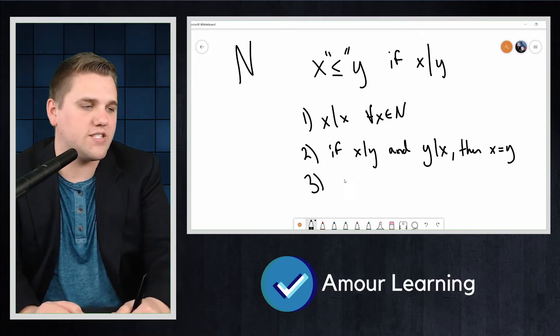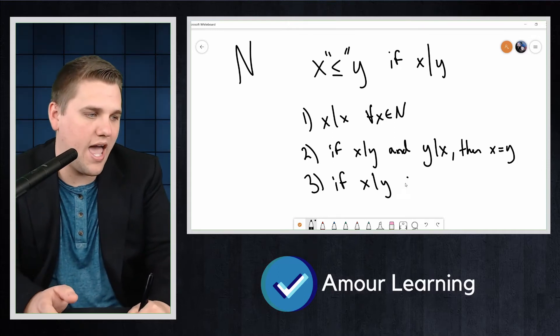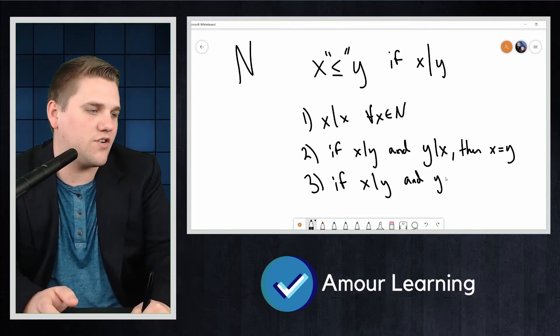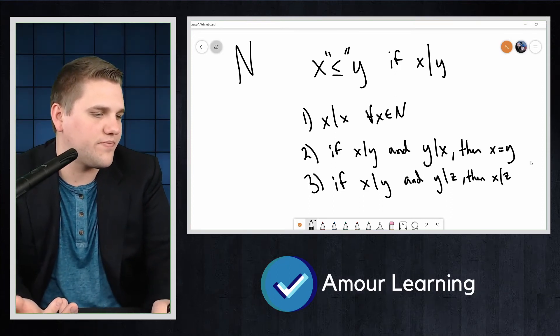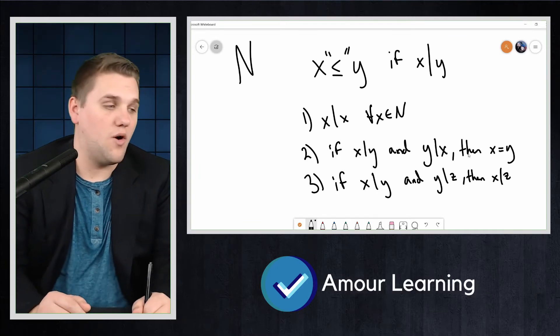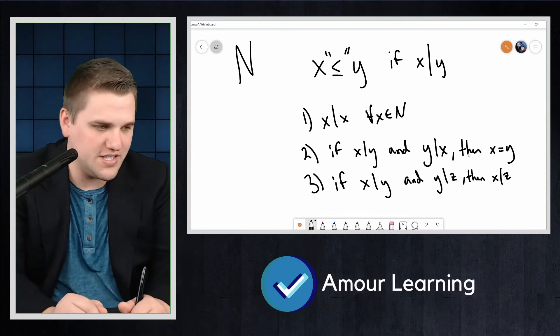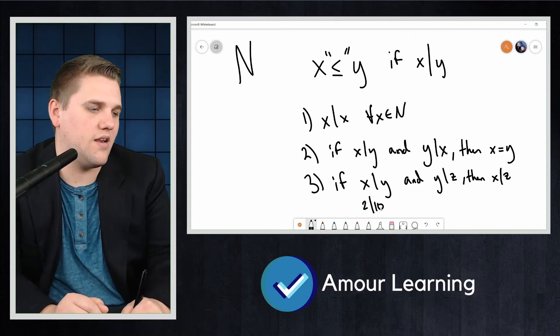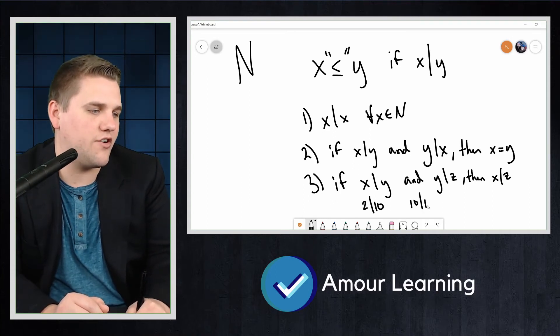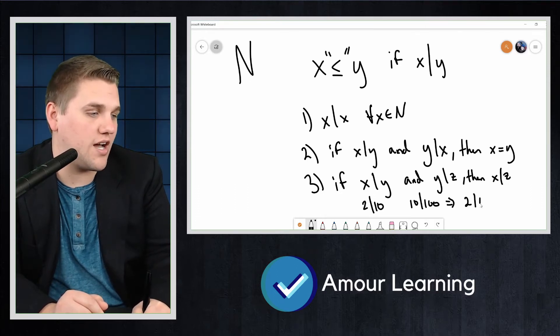The third property is the transitive property. If X is a factor of Y, or X divides Y, and Y is a factor of Z, which means Y divides Z, then X divides Z. We could see this if we say 2 divides 10 and 10 divides 100. That literally means that 2 divides 100.